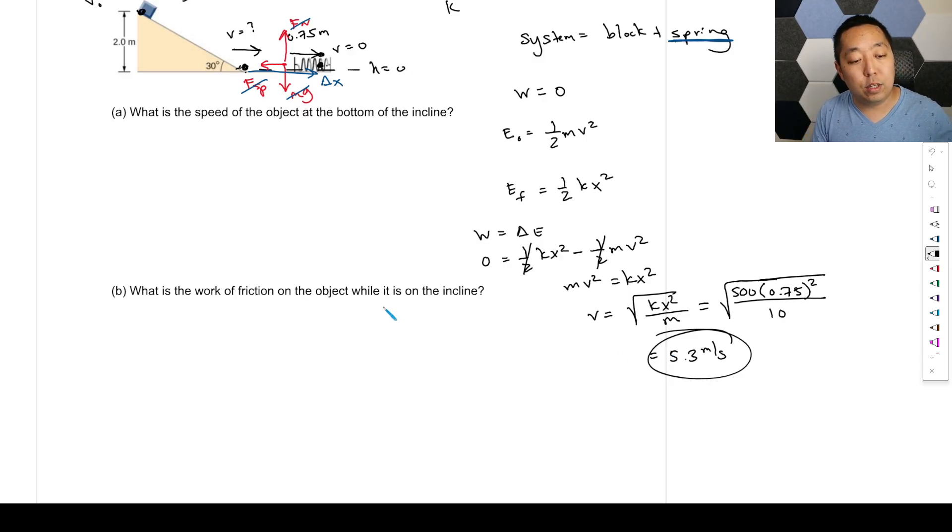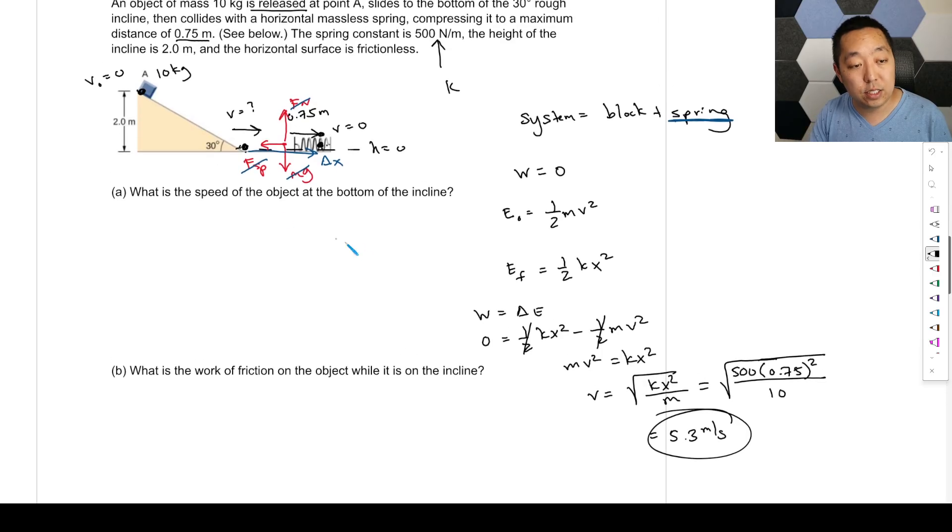Okay. Now, what is the work of friction on the object while it's on the incline? Okay, so let's look at that. Let's look at going from here to here. Now that I know this part, let's go from here to here. You could also go from here all the way to there. It doesn't really matter. But let's just go from here to here just because we want to only talk about the incline part.